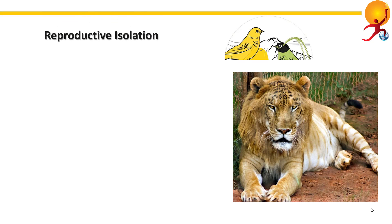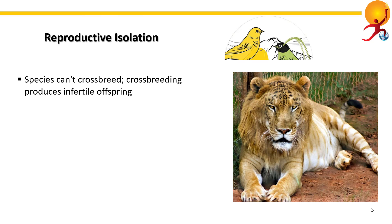Firstly, reproductive isolation. Reproductive isolation refers to various mechanisms by which different species cannot crossbreed among themselves, or even if they crossbreed, they would produce infertile offspring. This is an important phenomenon because it defines the concept of a species — inter-reproducibility is one of the criteria for defining a species.